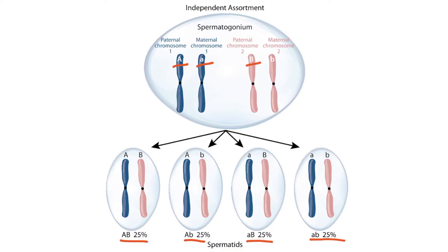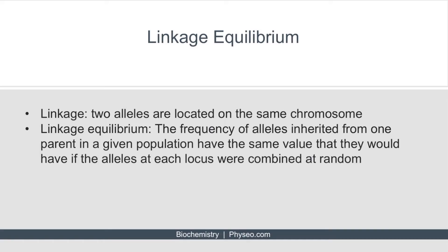With this background, let's discuss linkage equilibrium. Linkage refers to the idea that two alleles are located on the same chromosome — in other words, they're physically linked together. Linkage equilibrium refers to the idea that the frequency of alleles inherited from one parent in a given population have the same value that they would have if the alleles at each locus were combined at random. This sounds a little confusing, so let's do a question to see how this is applied.